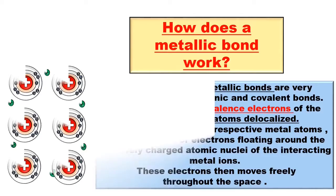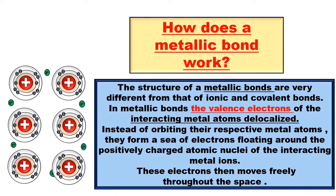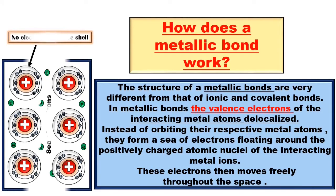How does a metallic bond work? The structure of metallic bonds are very different from that of ionic and covalent bonds. In metallic bonds, the valence electrons of the interacting metal atoms delocalize.